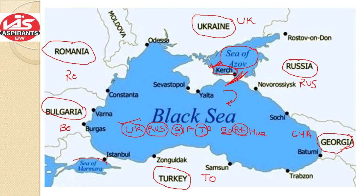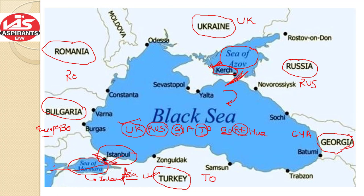Now this is the Sea of Marmara — it is a completely inland sea in the country of Turkey. We know that Turkey belongs to both Asia as well as Europe. How? Due to the Sea of Marmara, which divides Turkey into parts of two continents, that is Asia and Europe. Istanbul, which is a city in Turkey, belongs to both the Asia part as well as the Europe part. So remember, Istanbul is a city in Turkey which belongs to both Asia and Europe. The Sea of Marmara is an inland sea in Turkey and it divides Turkey into two parts — one belonging to Europe and another to Asia.